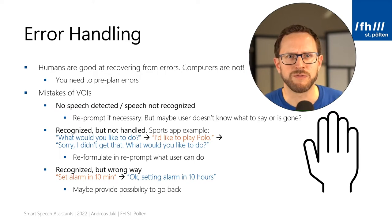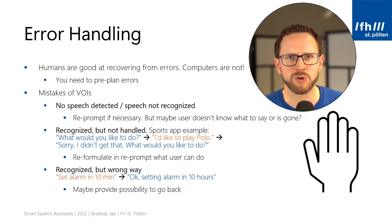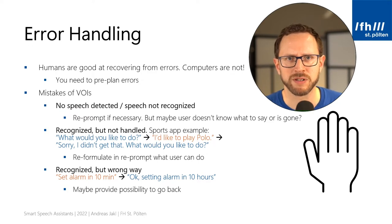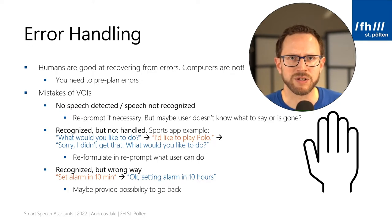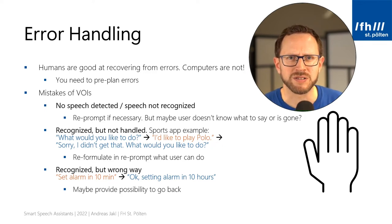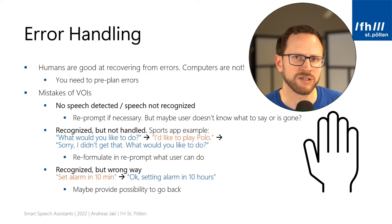For formulating the re-prompt, it's important to think about what could have happened. Maybe the user is gone — maybe somebody had to rush away from the conversation because the pot in the kitchen was overheating. But your skill can't wait for the user to return.